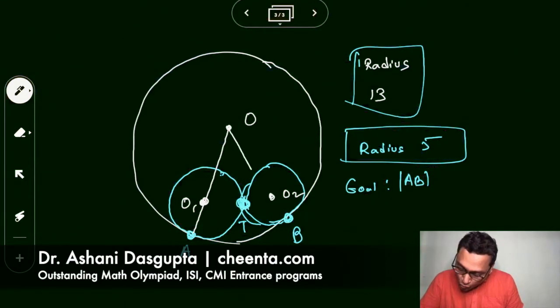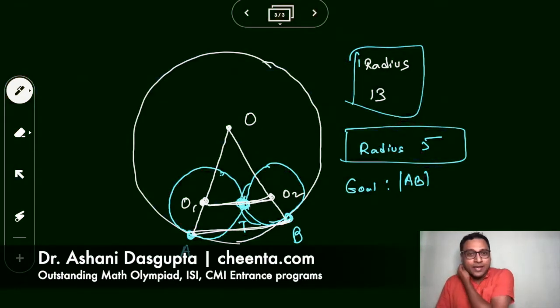Similarly, O, O2, B are also on the same straight line. That's also collinearity of centers. In fact, O1, T, O2 is a straight line. And let's finally join AB.